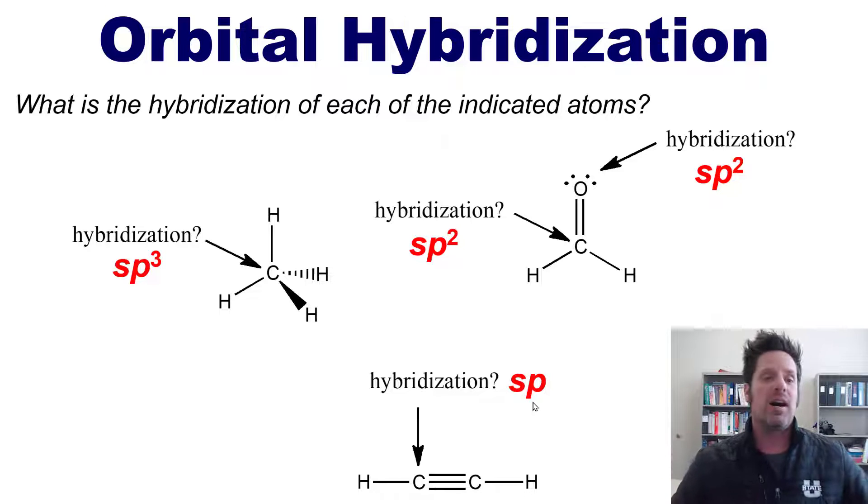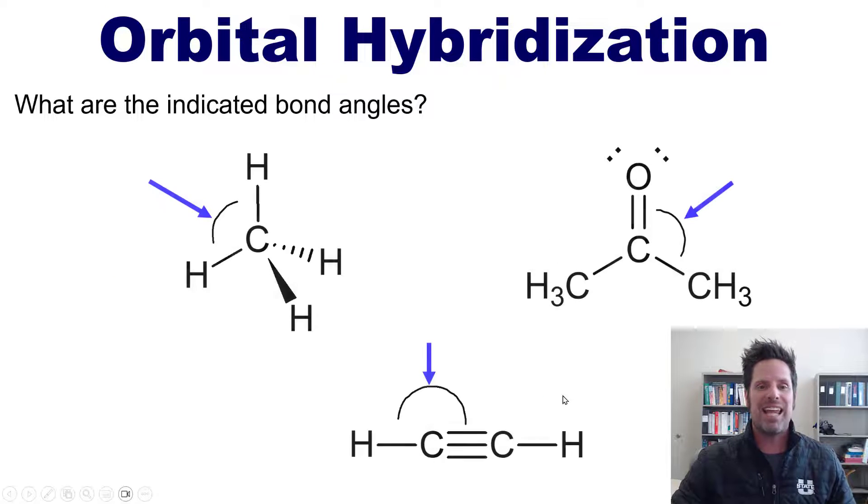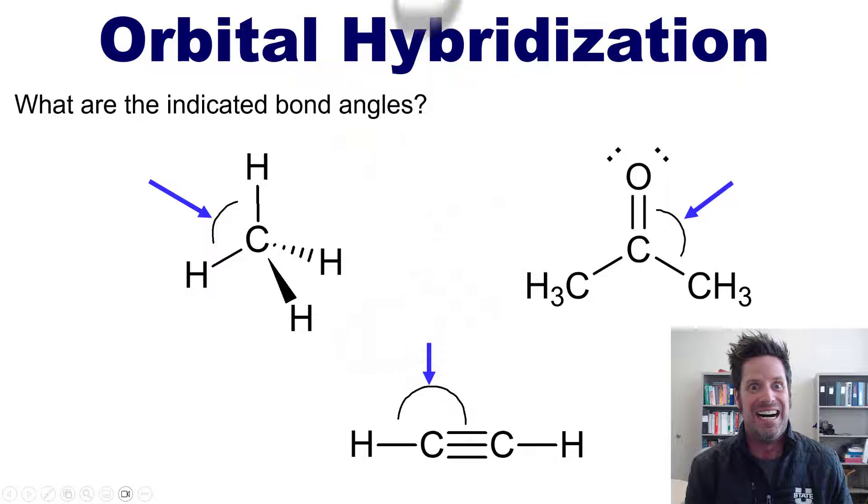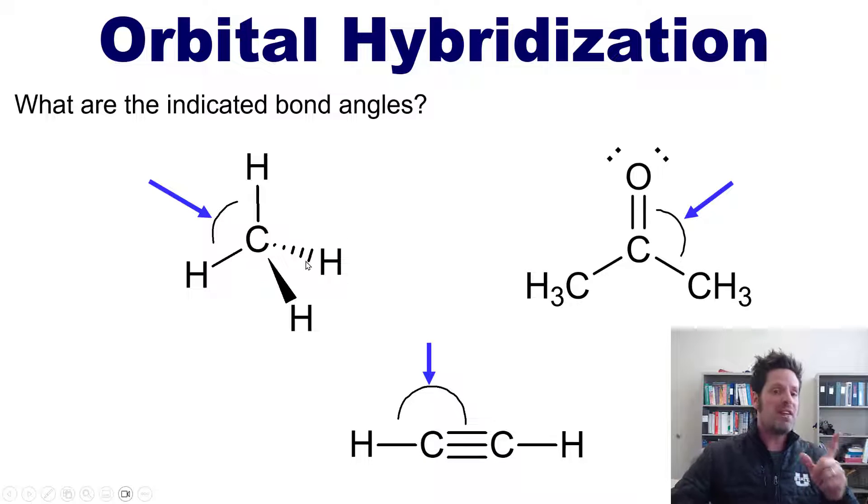Well, if you're feeling so smart then, I want you to tell me what the indicated bond angles are for each of the carbon atoms here. All right, as you might have noted from things that we learned in our past lecture, when you have a central atom surrounded by four groups, the ideal bond angle right here, tetrahedral geometry, is going to be 109.5.